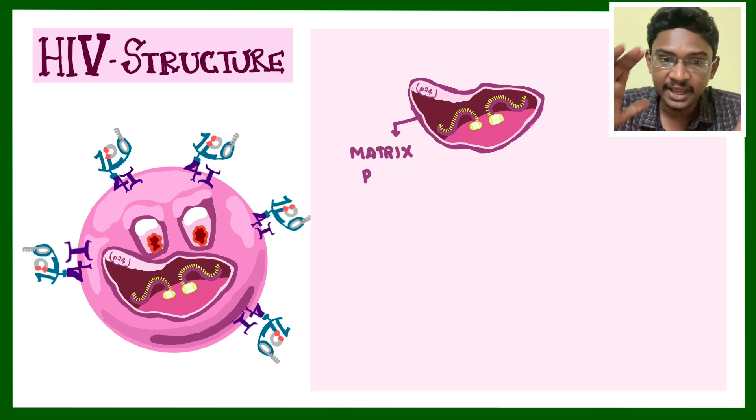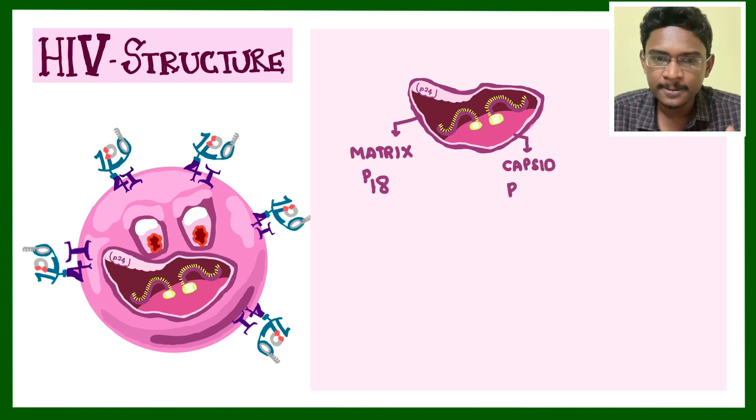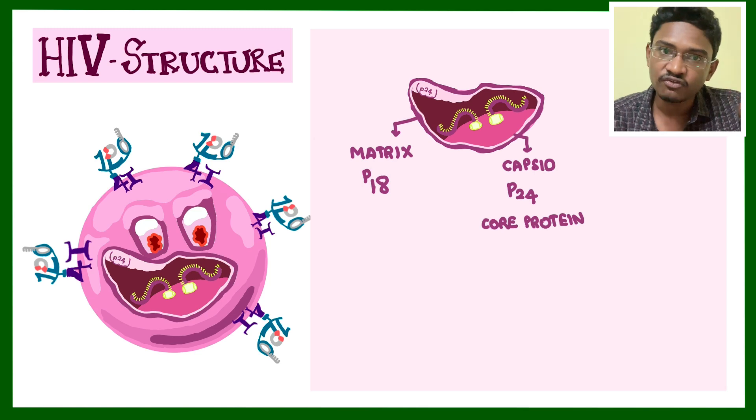In the capsid, there is an important protein called p24. This p24 antigen is very important because p24 antigen capture assay is becoming an important test for diagnosis of HIV infection. If this antigen is positive, that means you have HIV virion in your bloodstream.